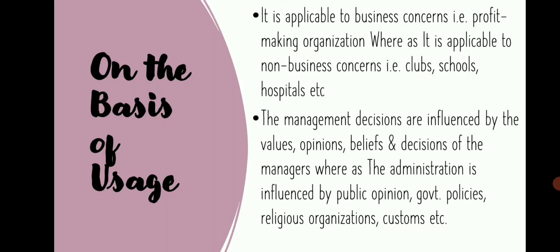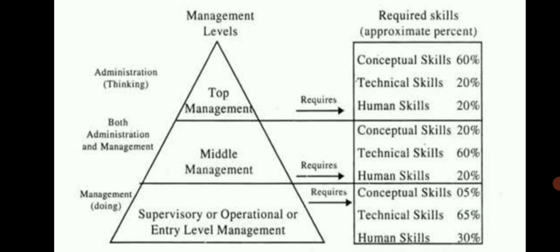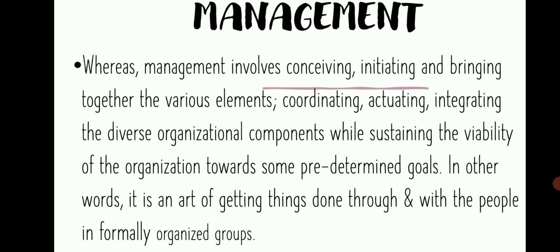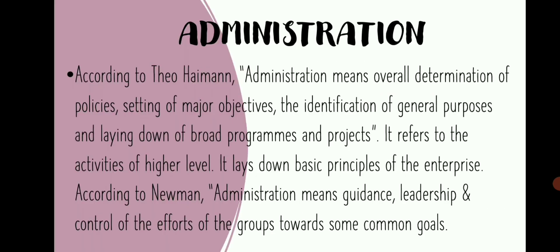Thank you very much. These are the major differences between administration and management. Administration is the thinking function — thinking about policies, setting major objectives, determination of plans and procedures. Management is the executing function — implementing the plan made by administration at the middle and operative level through planning, organizing, staffing, directing, and controlling, to complete the organization's objectives and goals within the given time framework.